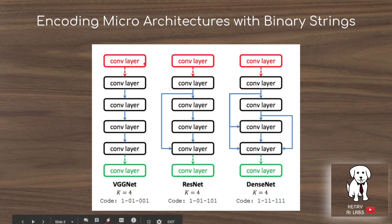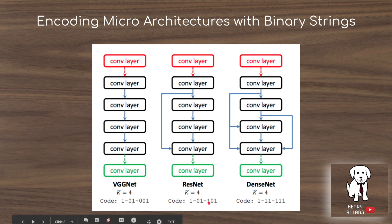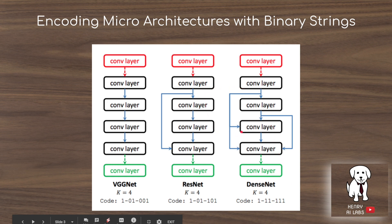In VGGNet, convolution operations are sequentially propagated with the previous layer taking input from the layer before, encoded using this bit string. ResNet propagates the output ahead to a further layer, encoded with a 1 in the bit string — meaning construct an edge from one node to another — then 0, meaning this one doesn't send its information ahead, then 1, take the input from this node. DenseNet is the all-1 bit string, which sends the input and output ahead to all previous layers.